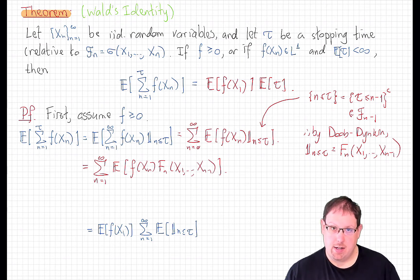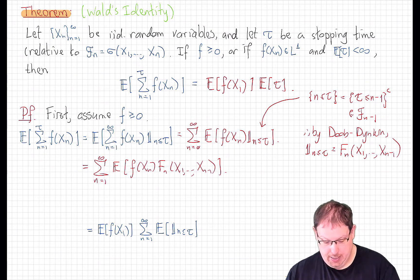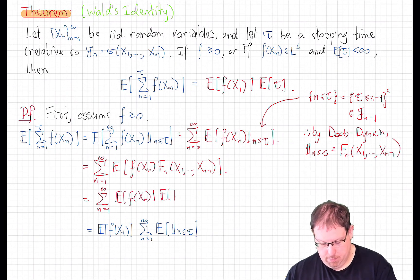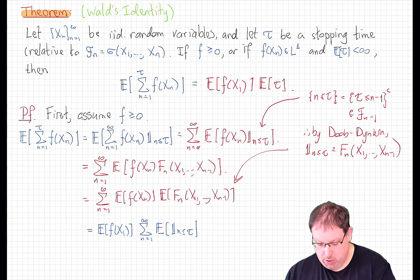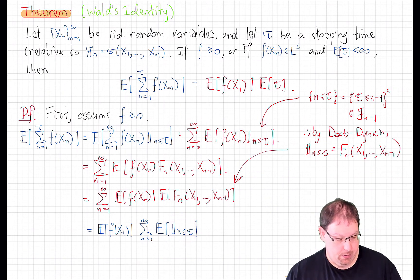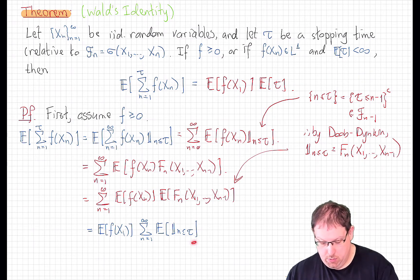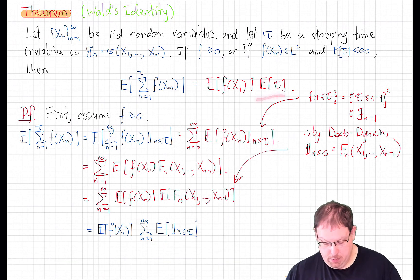But this sequence of random variables was assumed to be independent. And therefore, this expectation factors as the product. But now we just return that Fn to the form that it was. That's just the indicator function that n is less than or equal to tau. And so to conclude the proof in this positive f case, what we need to do is show that this sum here is equal to the expected value of tau. And that's a general phenomenon which sometimes goes under the term layer cake representation.